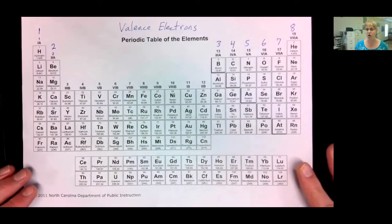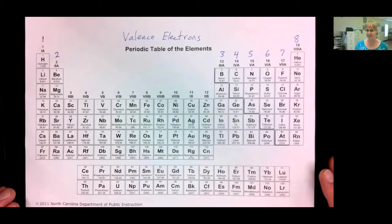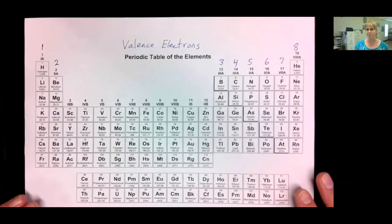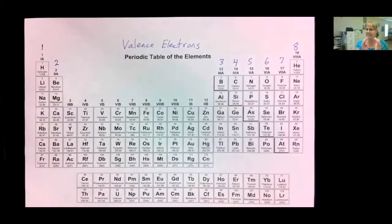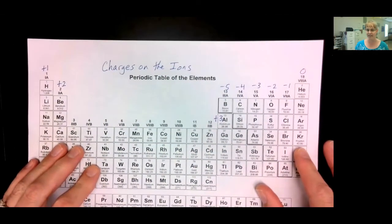So, that tells you the charges on the ions. Atoms are neutral elements. Ions are atoms with a charge. They have a charge because they have either gained or lost electrons. They can't gain and lose the protons and neutrons because those are in the nucleus and they can't move. The electrons are on the outside. They're easy to get to and take away or to add on.